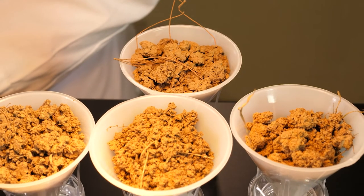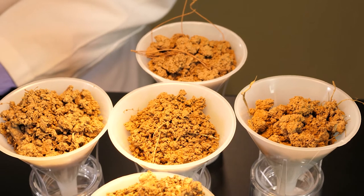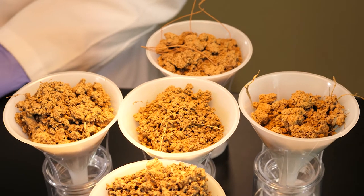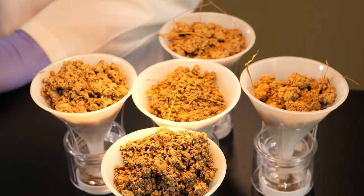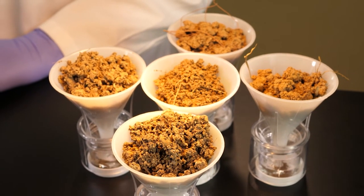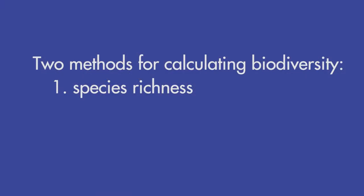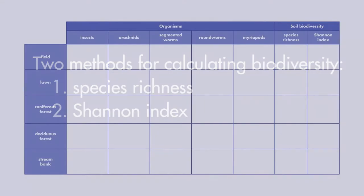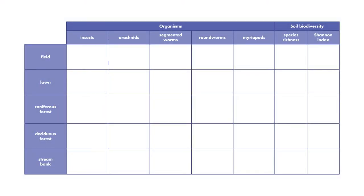We allow the Burlese traps to sit under the lamp for three days. After three days, we are ready to examine the results and determine biodiversity using two methods. The first method produces a number called species richness. The second method produces a value called the Shannon Index. We will record our observations in a table so you can compare the results.